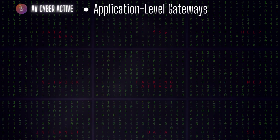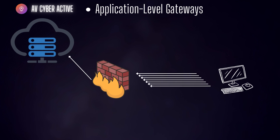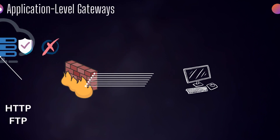Next, we move on to application layer gateways, also known as proxy firewalls. These are positioned at the application layer, or layer seven of the OSI model. They act as intermediaries between the client and server, handling all traffic on behalf of the client. Application firewalls understand specific protocols and applications such as HTTP or FTP, allowing more intelligent traffic decisions. They can detect and prevent application-specific attacks such as SQL injection or cross-site scripting.